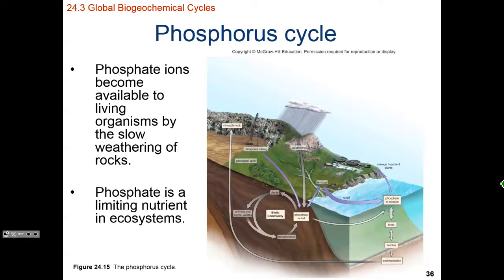Let's talk about the phosphorus cycle. We cycle phosphorus from inorganic to organic forms. The most available phosphate ion in the organic form is PO4³⁻ — organically available phosphorus or a phosphate ion. This phosphate ion will be stored long-term as a rock, and then we can mine that rock and use it to make fertilizer, which is added to the biotic community and can potentially cause runoff into aquatic ecosystems.